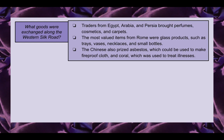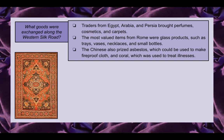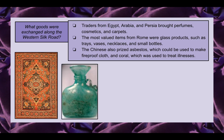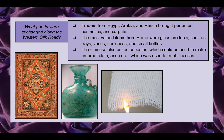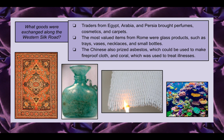What goods were exchanged along the western Silk Road? Traders from Egypt, Arabia, and Persia brought perfumes, cosmetics, and carpets. The most valued items from Rome were glass products such as trays, vases, necklaces, and small bottles. The Chinese also prized asbestos, which could be used to make fireproof cloth — though today asbestos is known to be very toxic. They also prized coral, which was believed to treat illnesses; if placed on a sick person and it lost its color, it indicated they were sick.